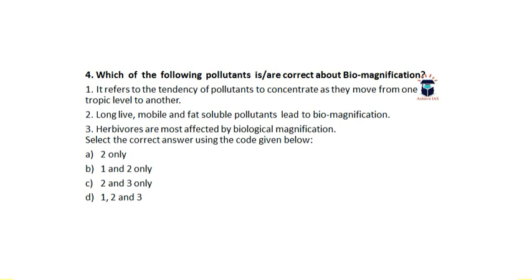The answer is B — statements one and two only. Statement three is not correct because it is the carnivores, not herbivores, that are most affected by biological magnification. Statement one is correct because biomagnification refers to the tendency of pollutants to concentrate as one moves from one trophic level to another.